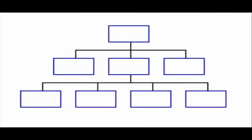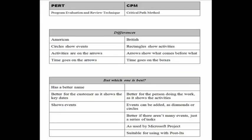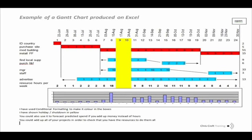Personally, I much prefer CPM. That's what Microsoft Project uses. It's more intuitive, I think. You can use post-it notes to do it in a really easy, convenient way. And also, you always have activities to do, but you don't always have events. The one snag with CPM is that it doesn't have milestones, but you can put them in at the Gantt chart stage anyway. It's important to note that whether you use PERT or CPM, you're still going to convert it into a Gantt chart sooner or later, and the Gantt chart will be the output that you want.